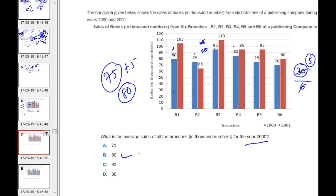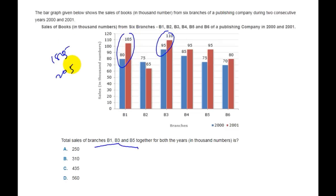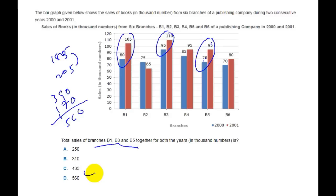Next question: the total sales of branches B1, B3, and B5 together for both years. B1 equals 185, B3 equals 185 plus some, B5 equals 100 plus 70 equals 170. Adding them: 390 plus 170 equals 560. The answer is 560.